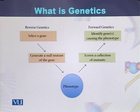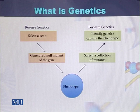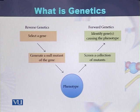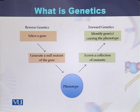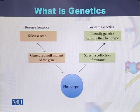In the case of forward genetics, a geneticist or researcher has to first identify the phenotype, then based on the phenotype, certain mutants or certain genes are screened, and ultimately a particular gene is identified that is causing the mutation or is responsible for a specific phenotype. So there are two ways of studying genetics: reverse genetics and forward genetics.